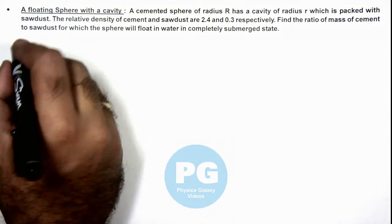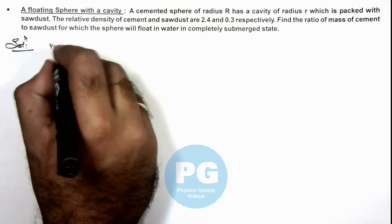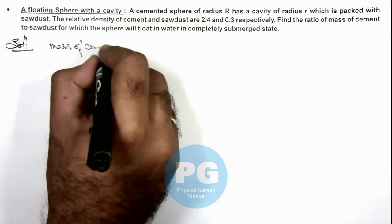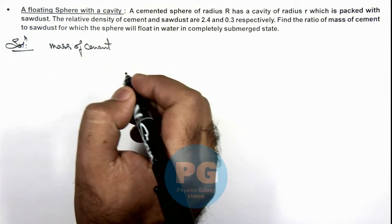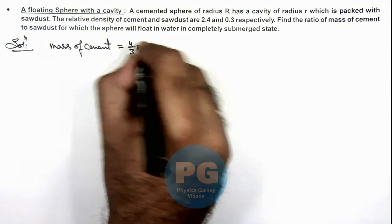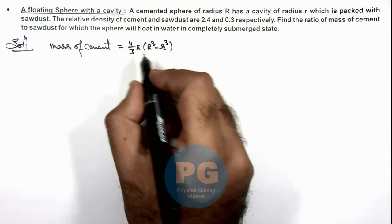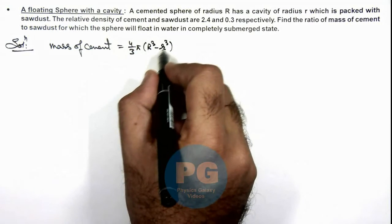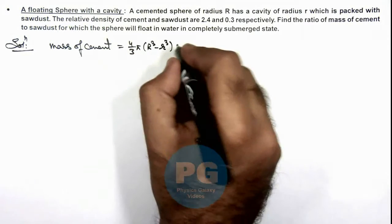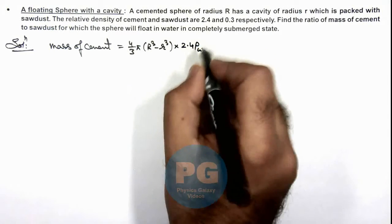So here first we can write the mass of cement in the sphere will be 4 by 3 π (R³ - r³) because we have subtracted the cavity volume from the total volume, multiplied by 2.4 ρ of water, that is the density of cement.